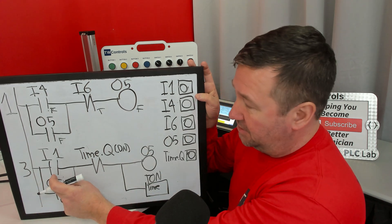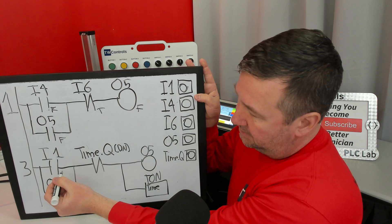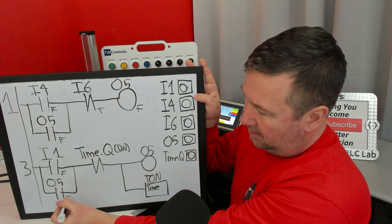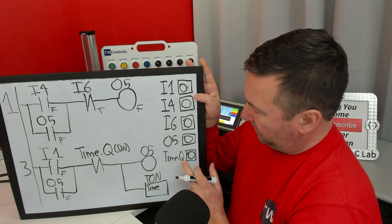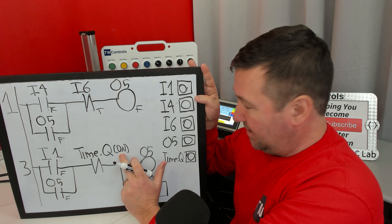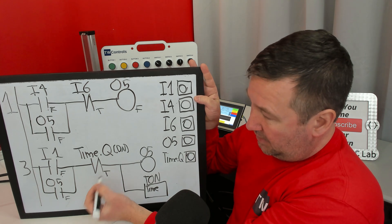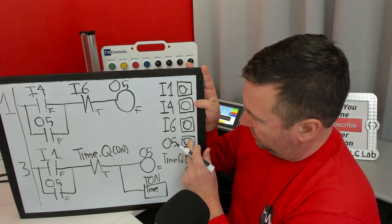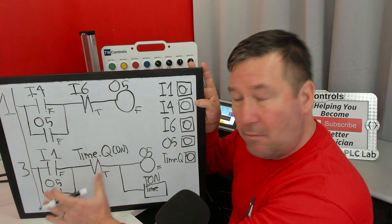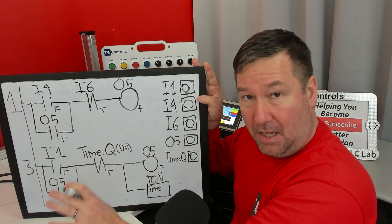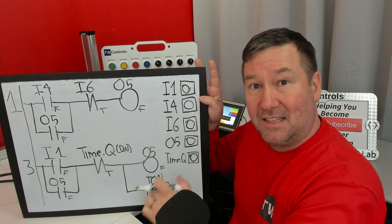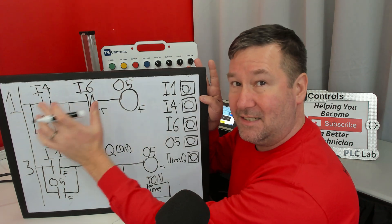Then it goes to rung 3. This instruction looks for a one - it does not have one, so it's false. Coming down, this instruction looks for a one at output 5 - it does not have one, so it is also false. This looks for a zero at the timer Q bit - in Connected Components it's a Q bit; in Studio 5000 it's a done bit. It does not have one, so it is true. But I do not have a continuous path of trues, so this will be false - writing a zero to output 5. And the false TON writes a zero to everything but the timer preset. Now for those saying the last rung wins and overwrites anything the first rung did - this will be important.